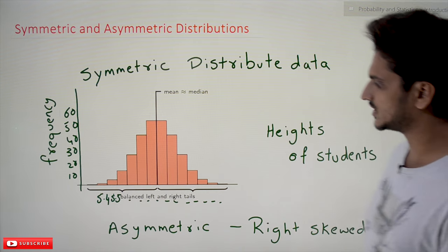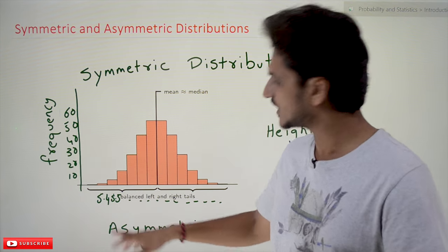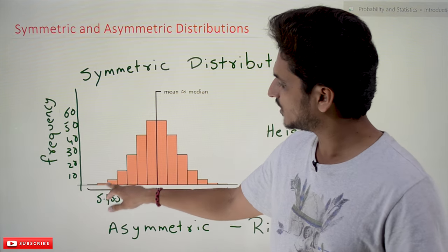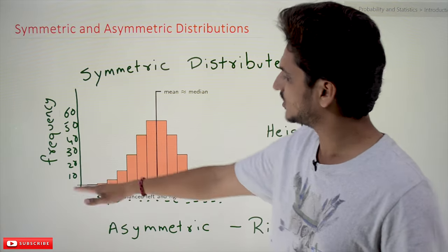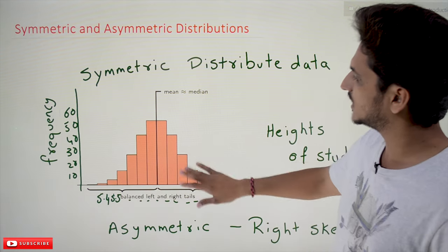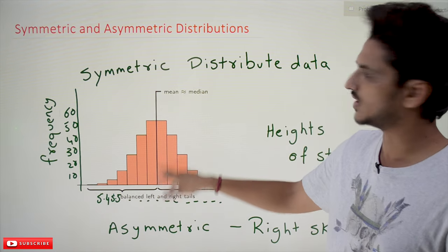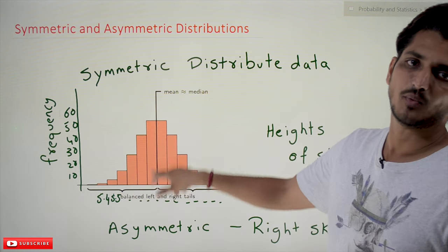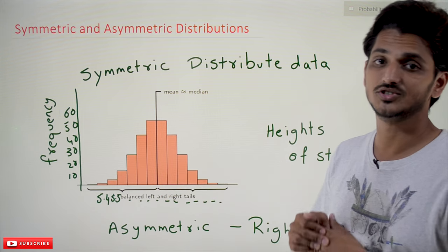If you collect the heights of students and plot it, on the Y-axis we take frequency — meaning how many students have a height of 5.4, how many have 5.5, and so on. On the X-axis we take the heights of the students. Most of the data clusters around 5.8 and 5.9, with around 50 students having heights between 5.5 and 5.8.